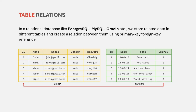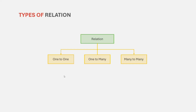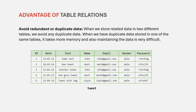Instead of storing all the data related to tweet and the user in the same table, we have separated it into two tables and then related those tables. The relational database relies heavily on relations between tables, and we avoid storing related data in the same table. There are also different types of relations you can create between tables. One advantage of using relations is that we avoid redundant or duplicate data. For example, when we store tweet and user detail in the same table, we have the tweet ID, the date when the tweet was created, the tweet text, and also the user details like which user made that tweet, his email ID, gender, password, etc.